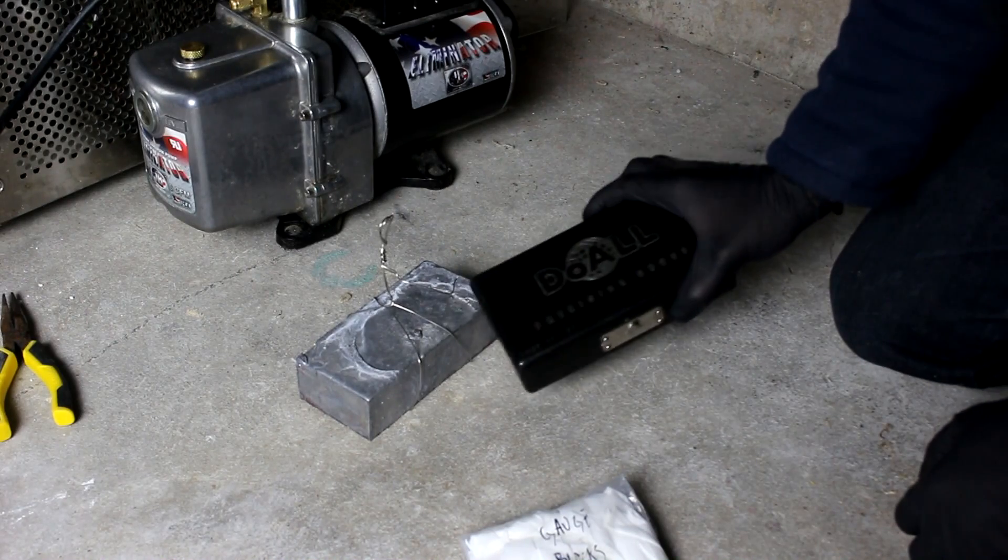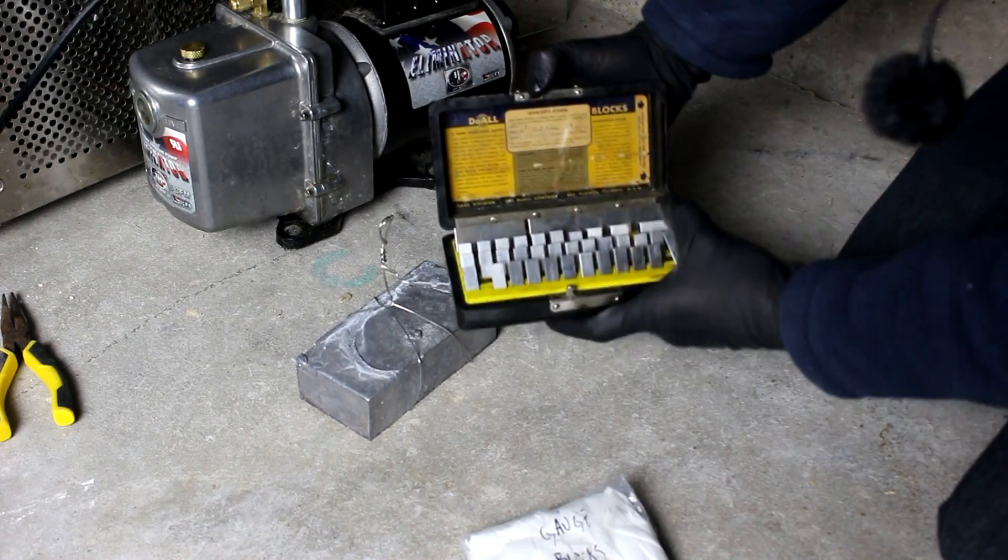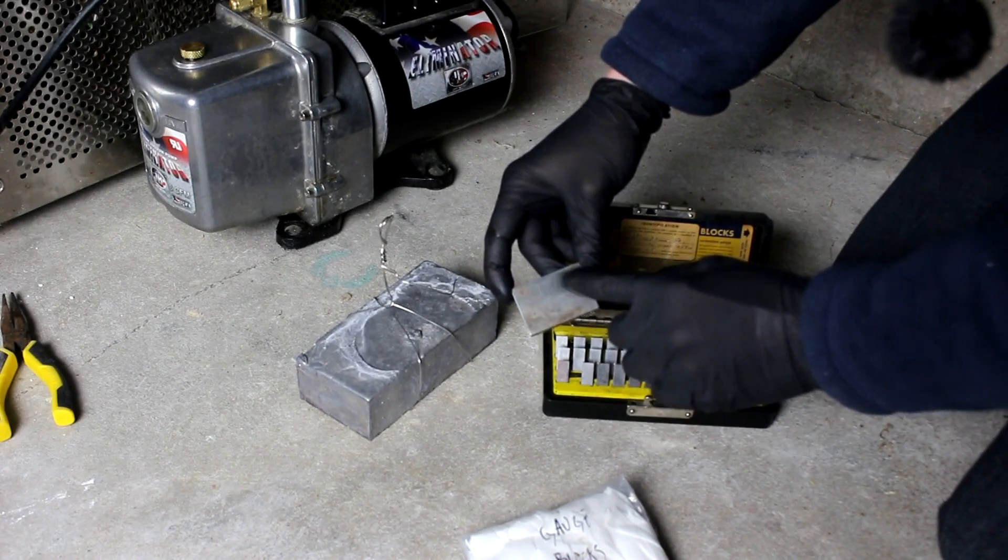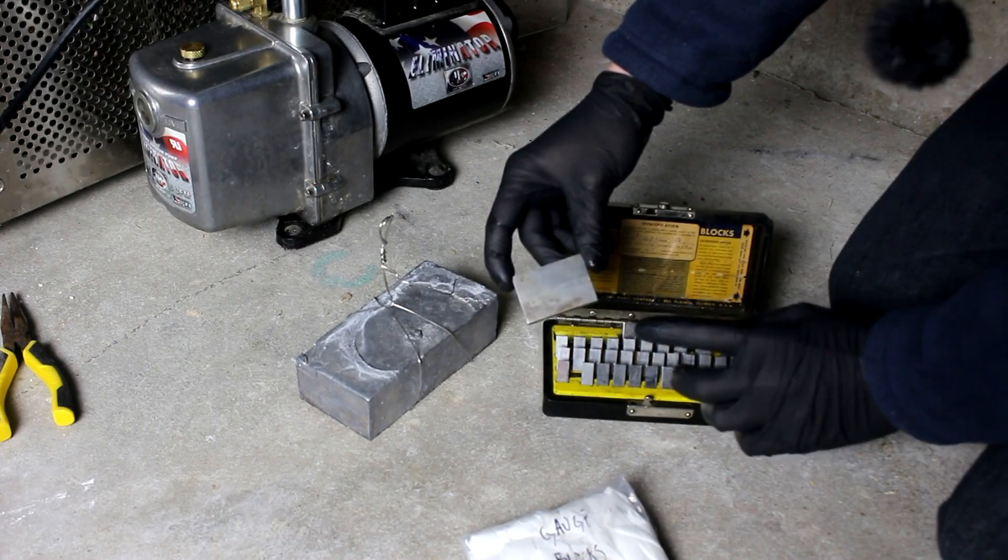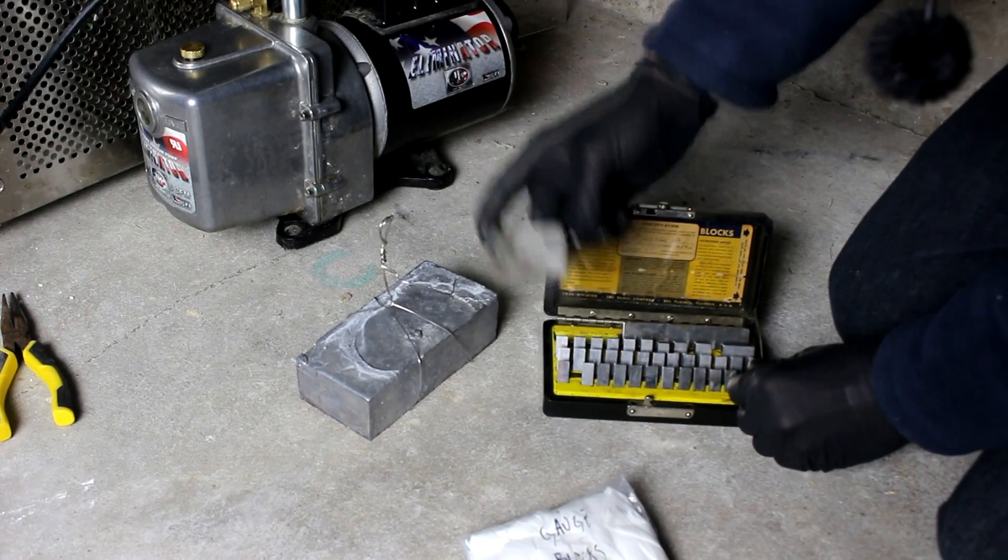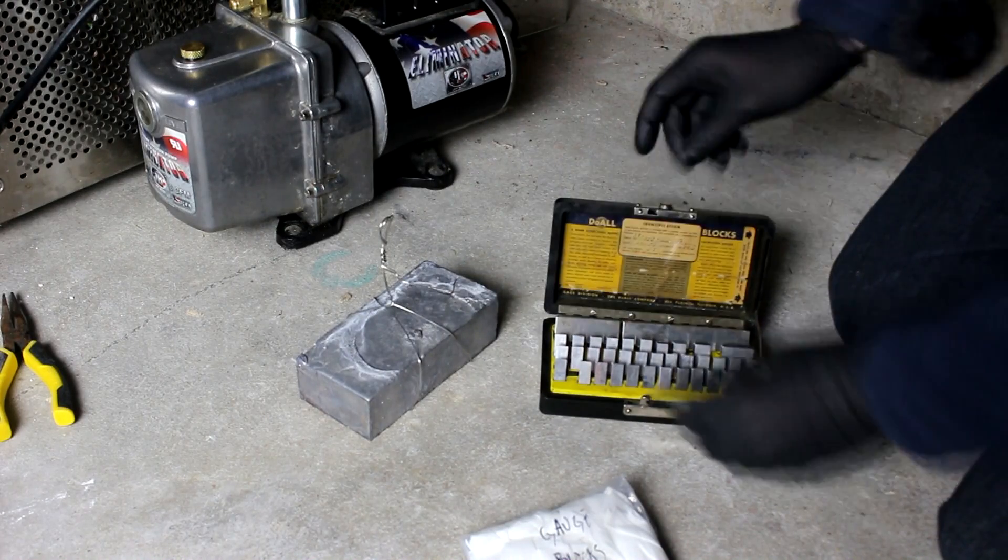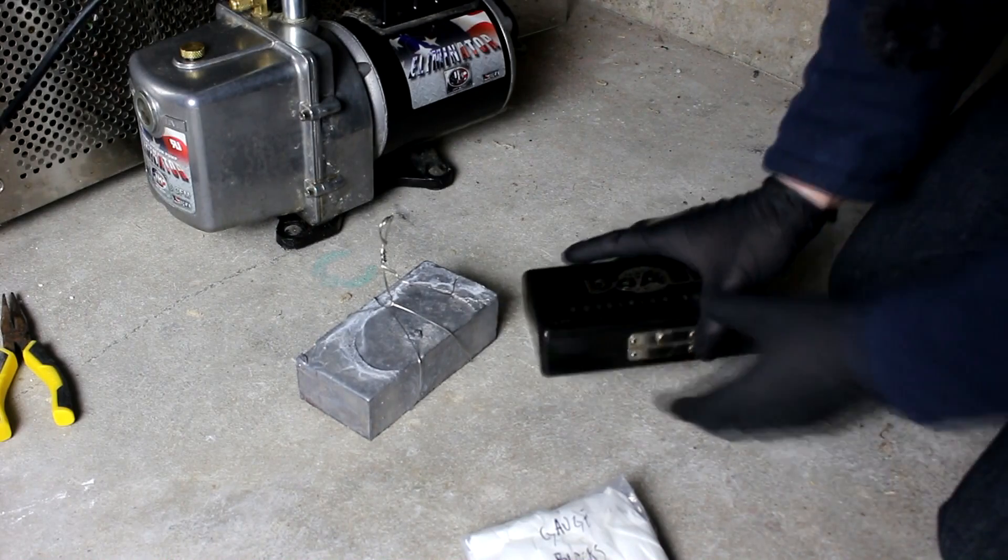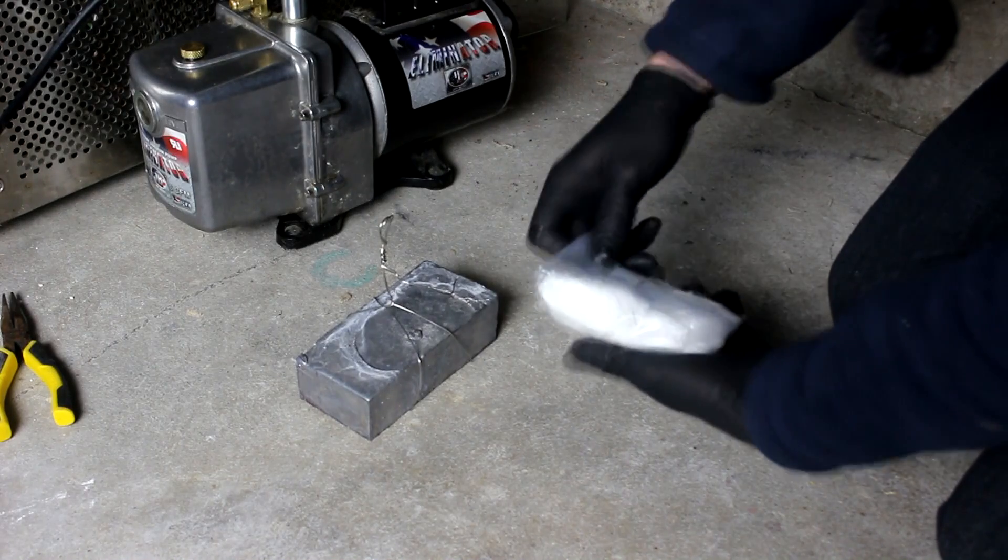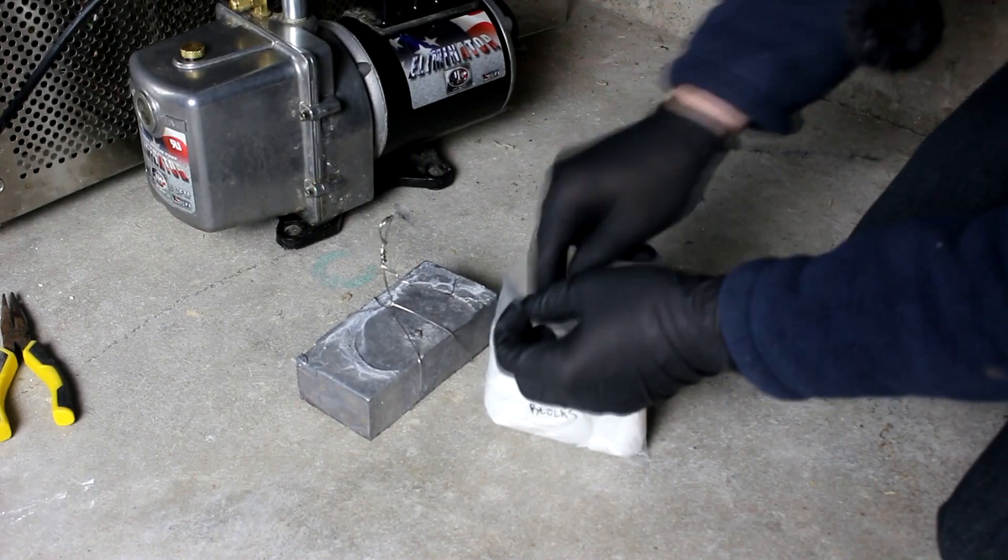So the funny thing is I actually have a set of gauge blocks here. These were made in the 1950s, I believe. Yeah, 1953. And the whole idea behind these is this block is supposed to be exactly two inches long. And this way you can have something to calibrate your calipers against. Make sure your calipers are giving you the correct readings. Anyway, these have been well-loved and probably not taken care of the best. And so let's see what Ave has got me here.